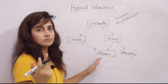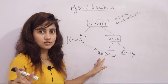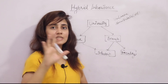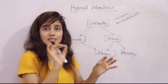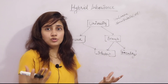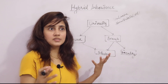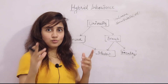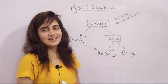In the next video we will see what the classic diamond problem in inheritance is and what the solution is in Python — basically, what is MRO (Method Resolution Order). See you in the next video. Bye bye, take care.